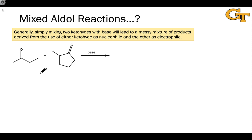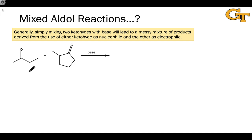So far we've focused primarily on dimerization reactions in which two copies of the same aldehyde react. One is nucleophile and one is electrophile in an aldol addition or condensation process. But the natural expansion of the scope of this reaction is to ask what would happen if we mix two different carbonyl compounds, say in the presence of base, and try to run an aldol reaction. Is there some way to selectively make one the nucleophile and the other the electrophile?